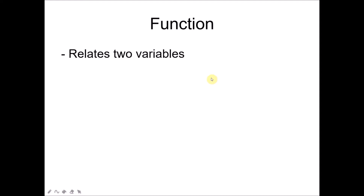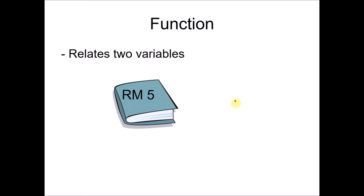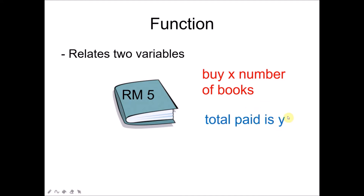A function generally means that it's a relation between two variables. For example, I'm at a shop, I want to buy a book, and the book costs me 5 ringgit Malaysia. So if I want to buy X numbers of books, I use X to represent the number of books that I'm going to buy. Then the total that I have to pay will be Y. So X is a variable, Y is a variable, and we can relate Y and X by writing Y equals to 5X.